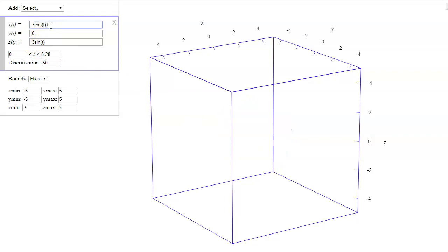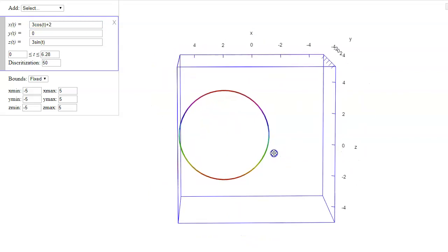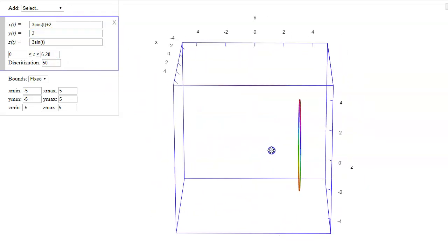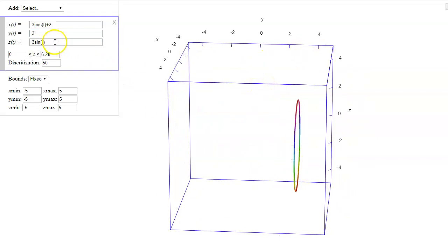So we shifted by 2 in the x. So now notice my x values are centered at 2, rotating around that. y we shifted by 3, so now notice my y values are all 3.